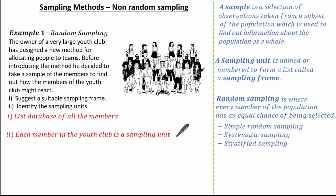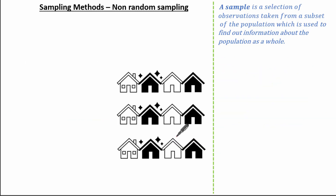So that was a quick recap on random sampling. Now let's look at non-random sampling. Non-random sampling is where we do not take into account the chances of a member being selected and we cannot have a sampling frame. These are called non-probability sampling methods.